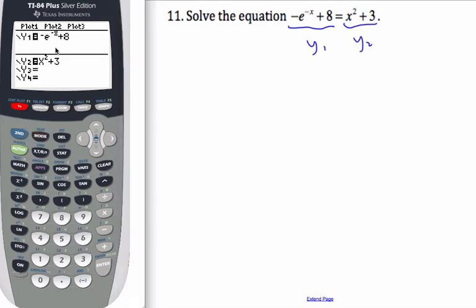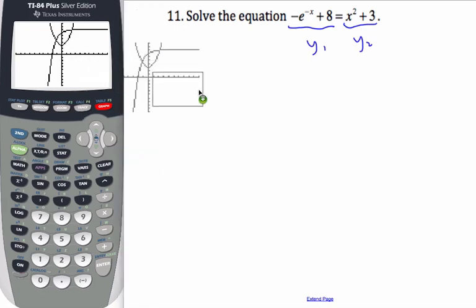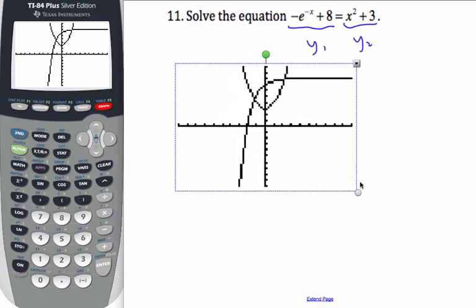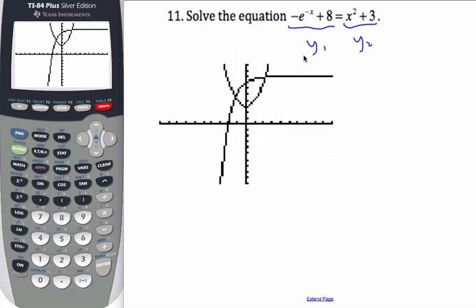So I go to the calculator, and I've already got them entered, and I hit my graph window. And what I want to find is these particular points of intersection. If I find the intersection points here, then I've found my solutions.